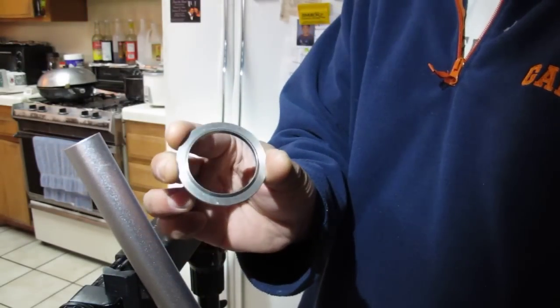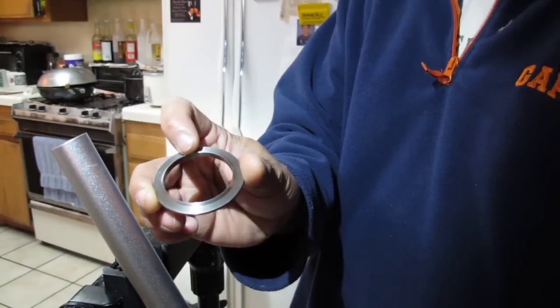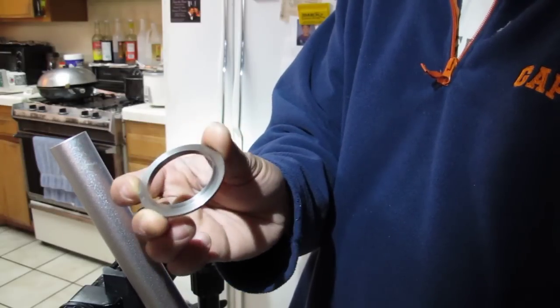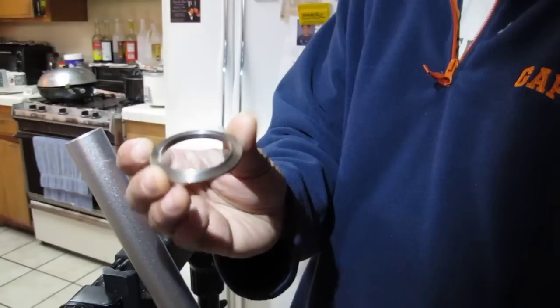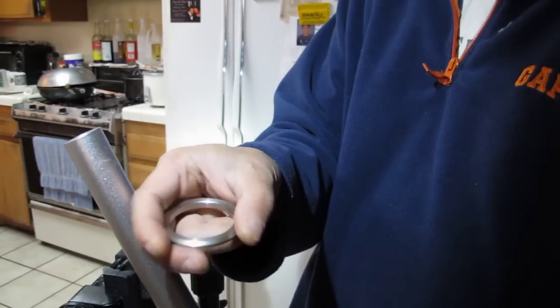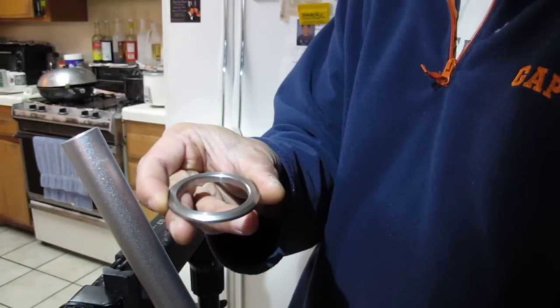Also if you look closely, there's a lip on there and that lip sits up against the bearing. Then you'll see a flat side on here and that sits against the fork.